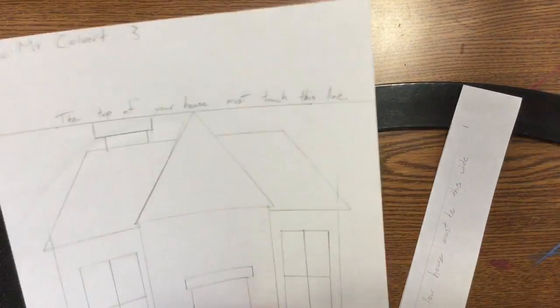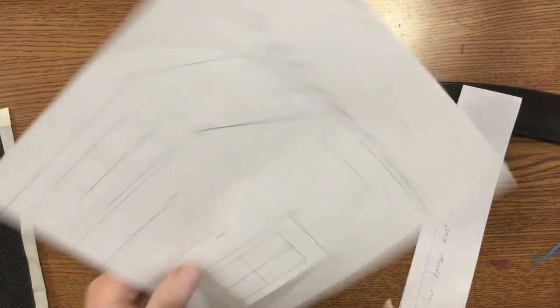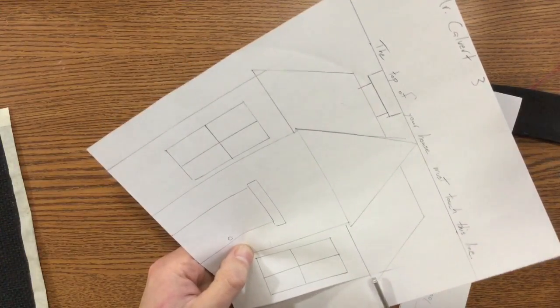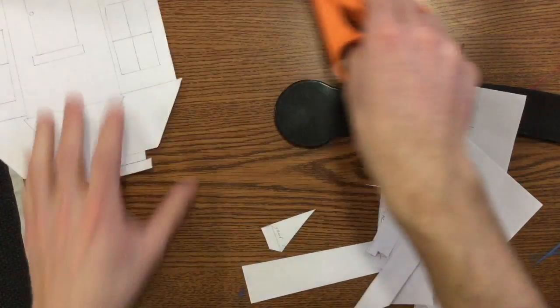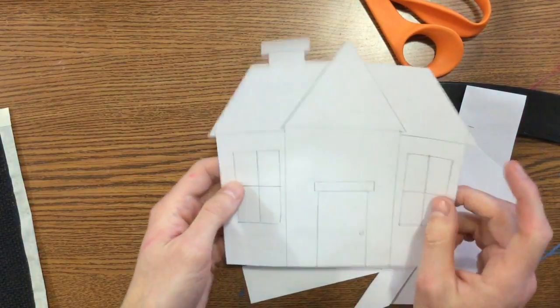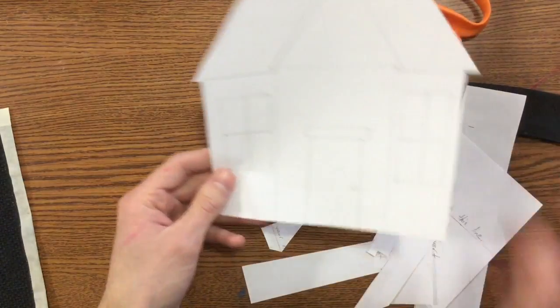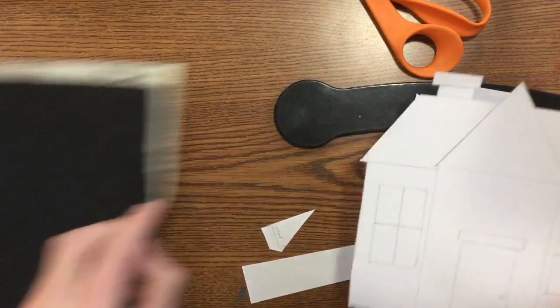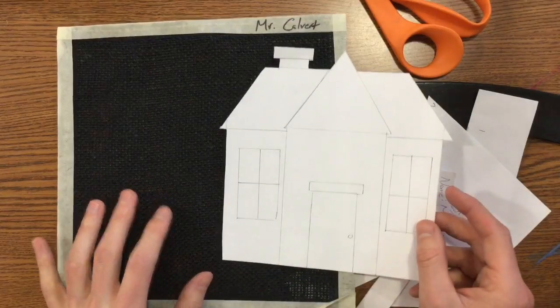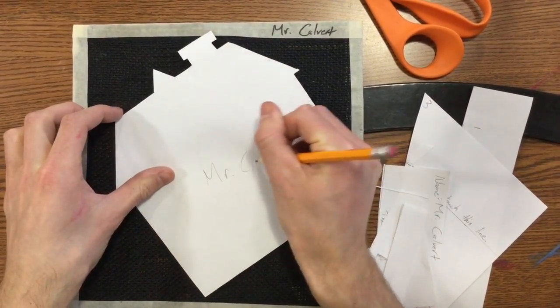You're also going to notice that you're cutting off your name, so you have to write your name on the back. If you get this far, that's awesome. If you don't get it cut out today, that's fine too. We'll get them cut out next time. When you're done, make sure to start two separate piles up on the front counter. Make sure to have your name on the back of that house.